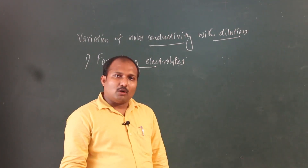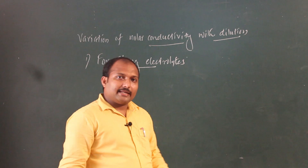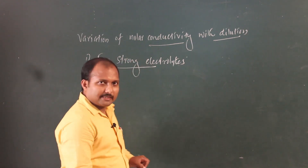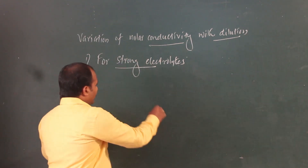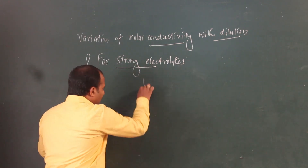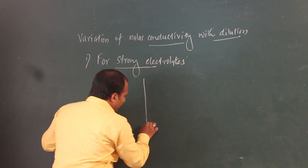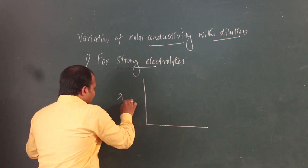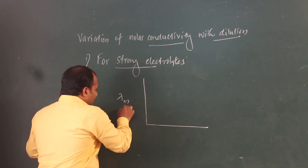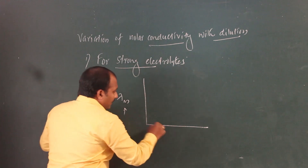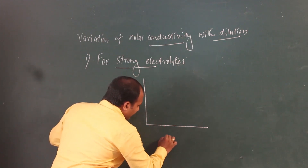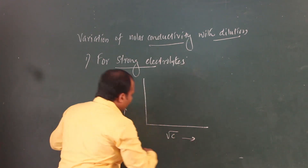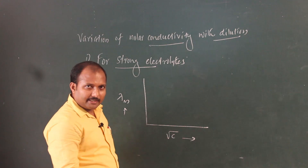On a graph of molar conductivity against the square root of concentration — the Lambda_m against root C graph — the y-axis represents molar conductivity and the x-axis represents the square root of concentration.